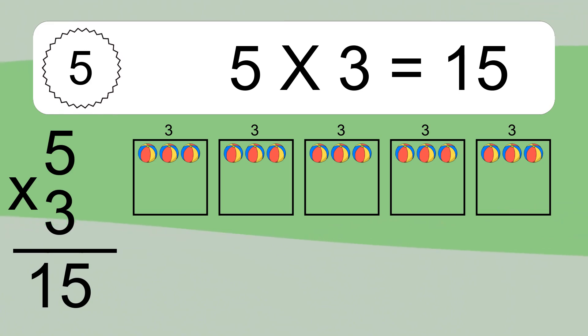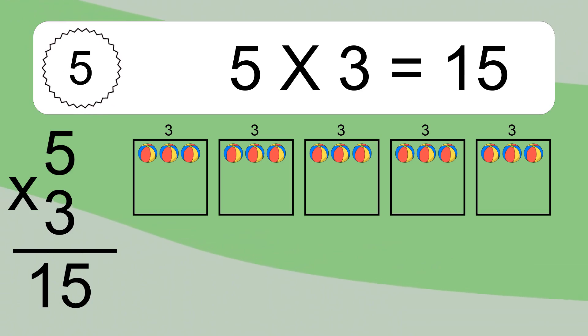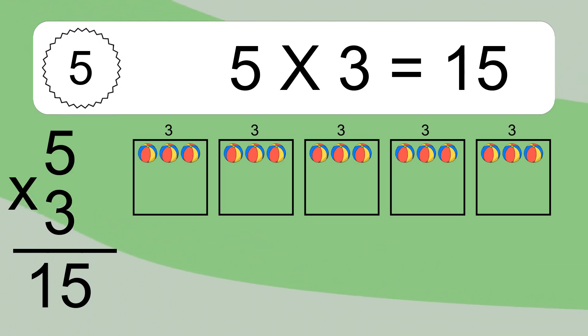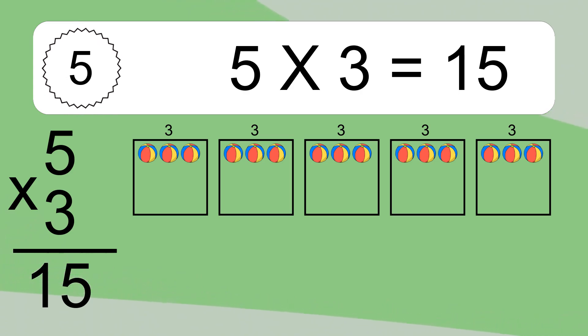We have 5 boxes, and each box has 3 colorful balls inside. If you count all the balls in all the boxes together, you will have 5 times 3 balls. This equals 15 balls.